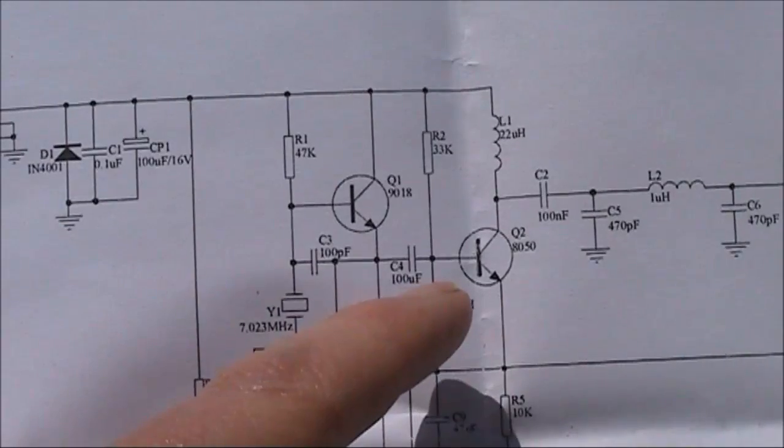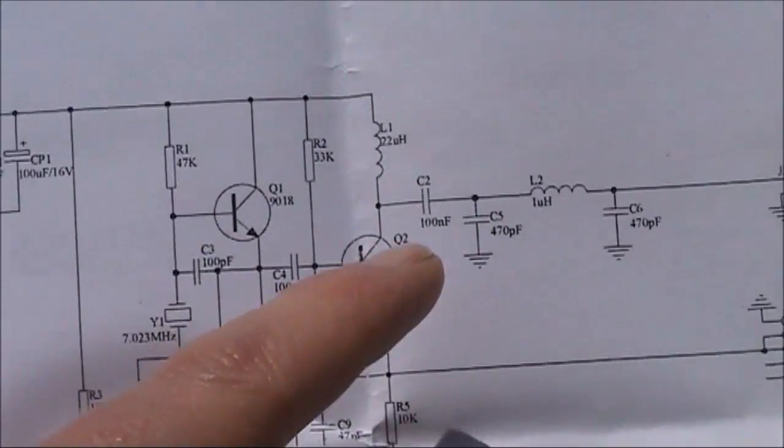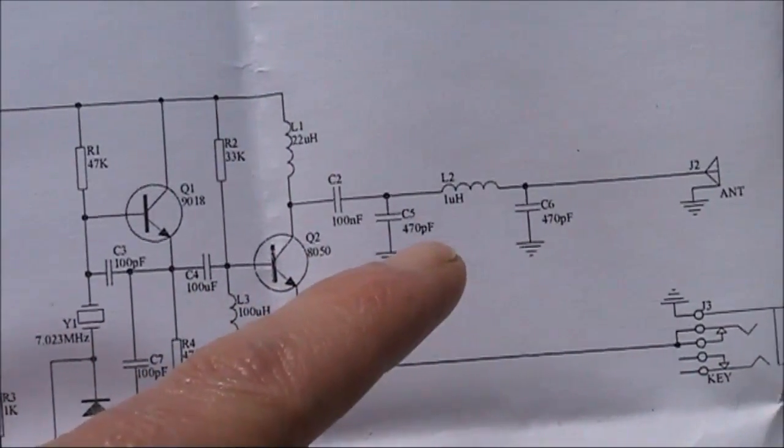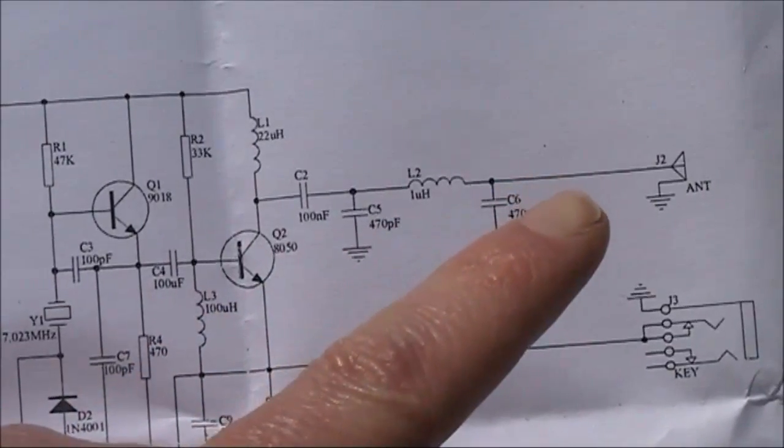Q2 on transmit is a RF power amplifier. This is a low pass filter, which goes to the antenna connection.